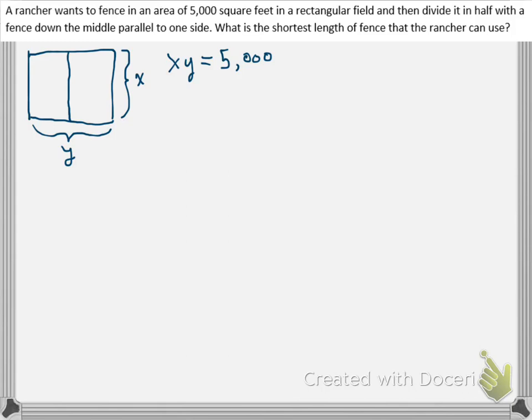Now, what is it we're trying to optimize? Well, that's the total length of the fence. If we were to go around this fence, we have y plus x plus y plus x, then plus one more x. So 3x plus 2y is our optimal function. Let's call it L for the length of the fence.